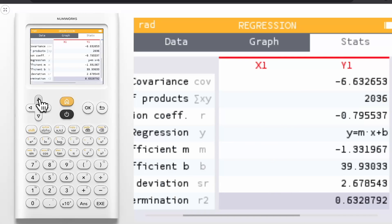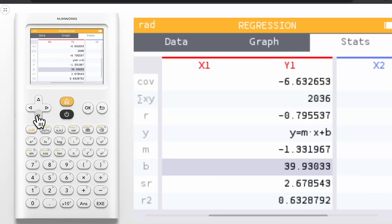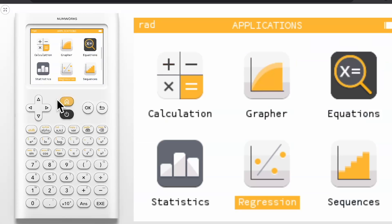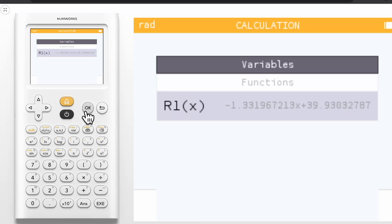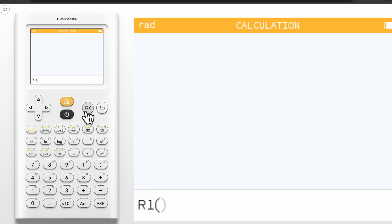You can now use regression information in other applications of the calculator. Notice that the regression model we've created is y equals negative 1.33x plus 39.9. Let's navigate to other apps to see how this works. Press the home key. To start, we will enter the calculation application and press the var key. In addition to accessing the lists x1 and y1, you can now access the regression function r1 of x from the function section. This is helpful in the calculation application if you wanted another method of generating predicted values. Just press OK and input the x value. For example, I can find r1 of 21 and then press execute.